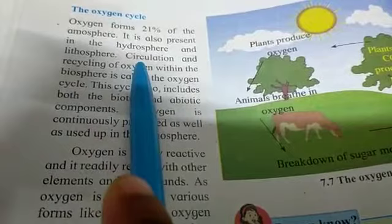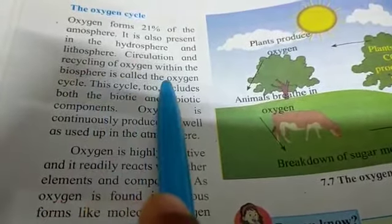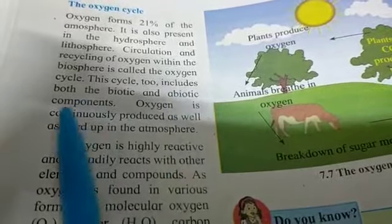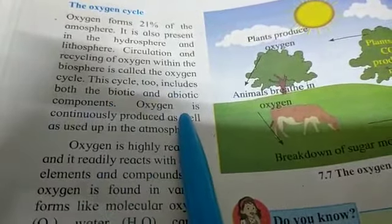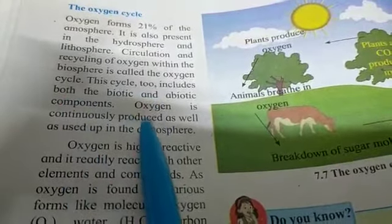The oxygen that circulates in the Biosphere — that process is called the Oxygen cycle. This cycle includes both the biotic and abiotic components, meaning the cycle involves both living and non-living components together.